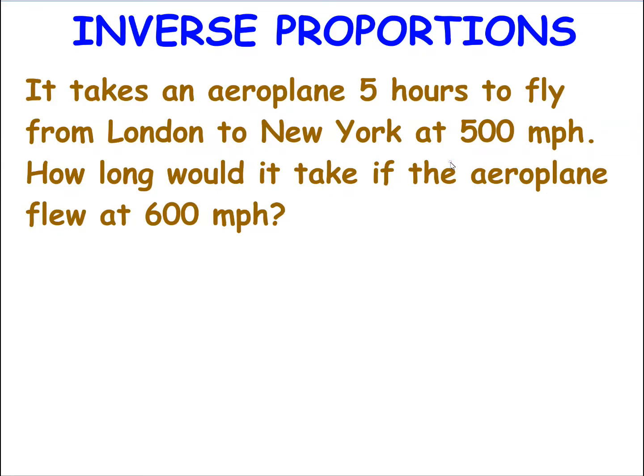Here's another problem to have a look at. It might be slightly more complicated, so we might need a calculator. But let's have a go and see if we can do it without. It takes an aeroplane five hours to fly from London to New York at 500 miles an hour. So we've got hours and we've got miles per hour, and we know it's five hours at 500 miles per hour. Now, how long will it take if the aeroplane flew at 600 miles per hour? So the speed has gone up. So I can see that I'm expecting the time to come down. If something happens faster, if the plane flies faster, then I would expect the time to be less. So I've got an inverse proportion. It's clicked in my mind. I'm looking at an inverse proportion.